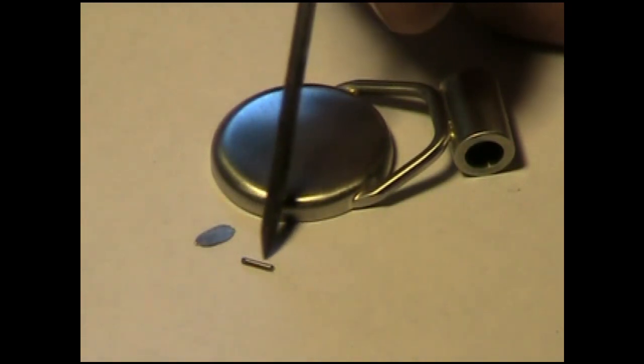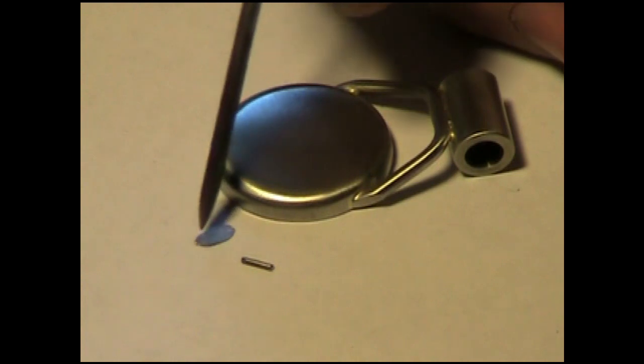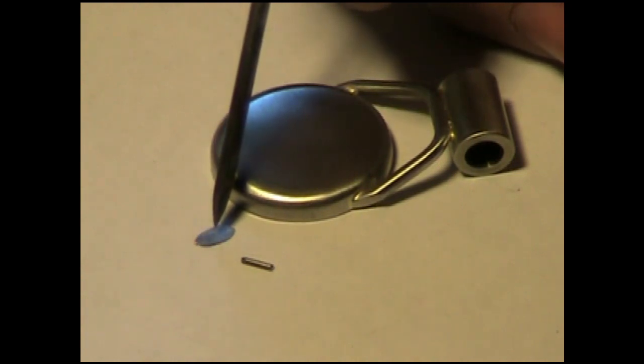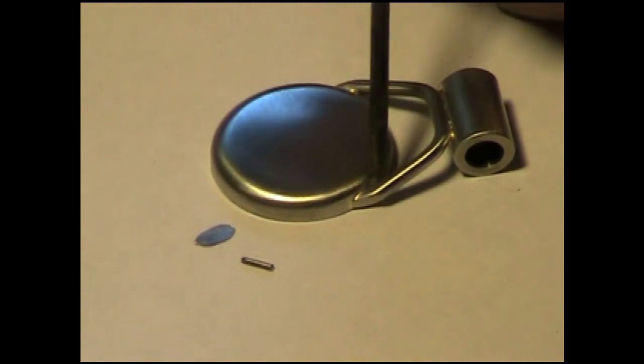This is a short piece of silver solder, about an eighth of an inch long. This is the same length of silver solder, but it's been smashed flat so I can put it between the two parts.